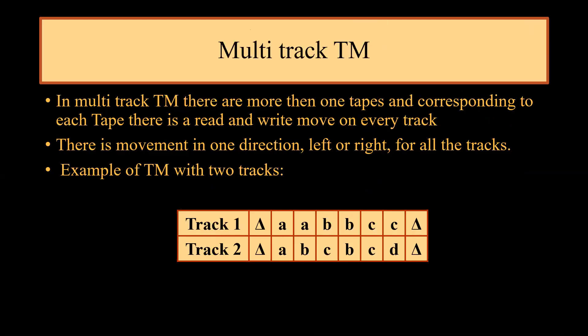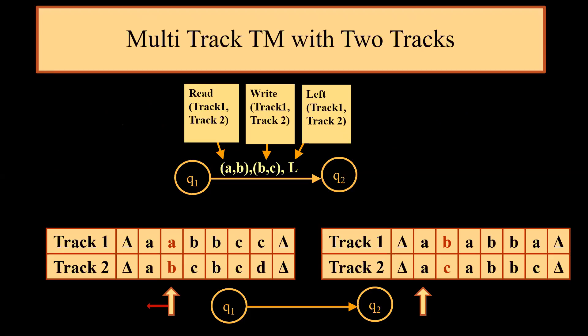Next we move to multi-track Turing machines. In multi-track Turing machines there are more than one tapes and corresponding to each tape there is read and write move on every track. There is a movement in one direction, left or right, and this movement takes place for all the tracks of the machine. We are considering a machine in which we have two tracks, track one and track two. Read-write operation performed in multi-track Turing machine is shown here: A, B means read A from track one, read B from track two. B, C means write B on track one, write C on track two, and move one step left.